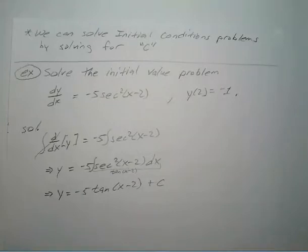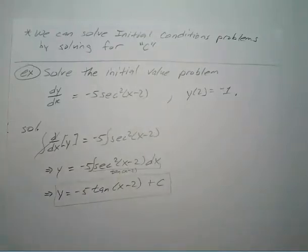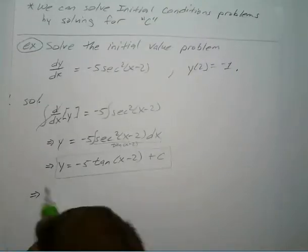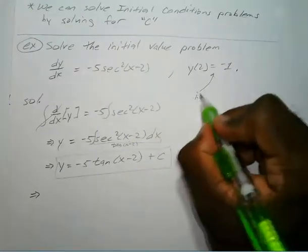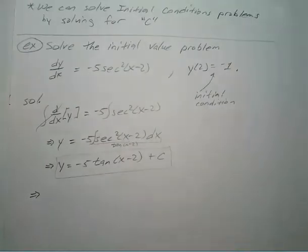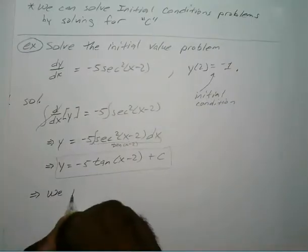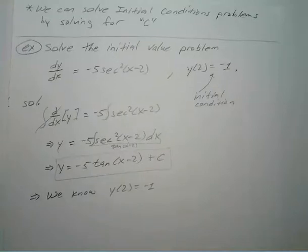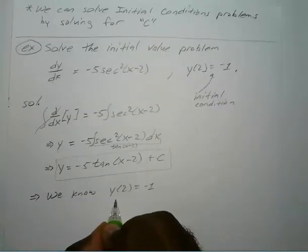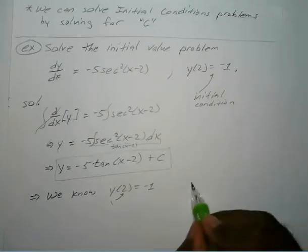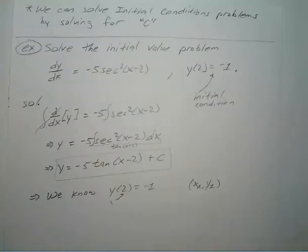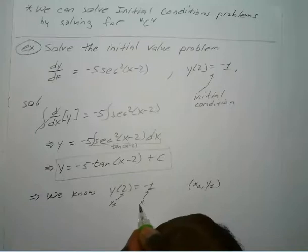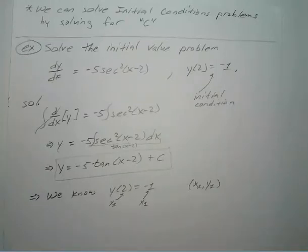Now we are not done yet — we still need to use our initial condition. We know that y of 2 is equal to negative 1. Think of this as your x₁ and y₁ — your x value is 2 and your y value is negative 1.